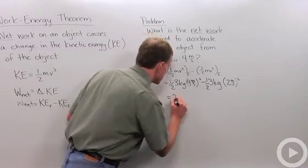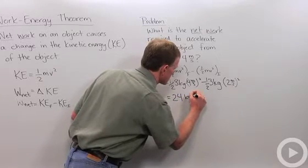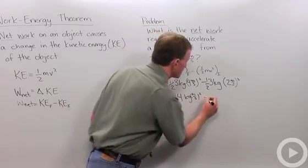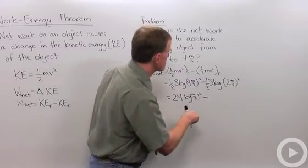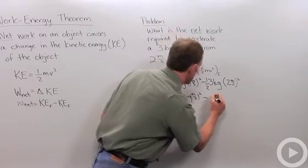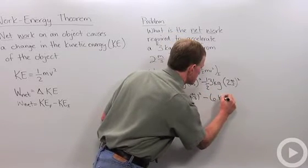And I'm going to subtract from that. I've got two squared is 4 meters per second squared, and times three is 12, and one-half of 12 is 6 kilograms.